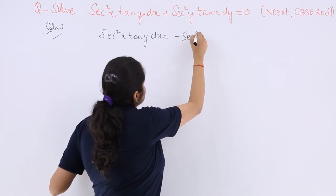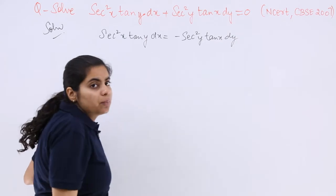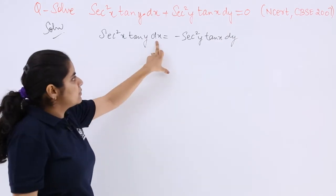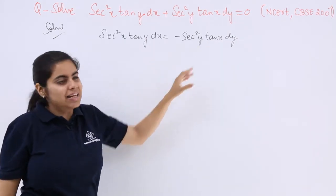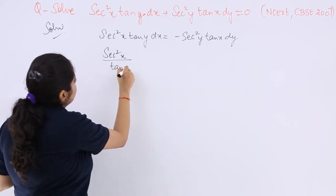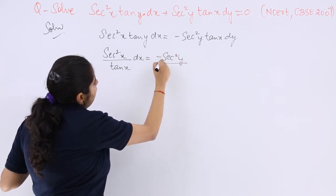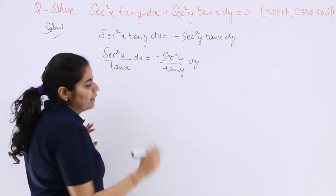Let's take one to the other side of the equal to sign. So this becomes sec²x tan y dx = -sec²y tan x dy. Now if this is sec²x with dx, where is another x term? This is tan x. So I have sec²x/tan x dx = -sec²y/tan y dy, right?